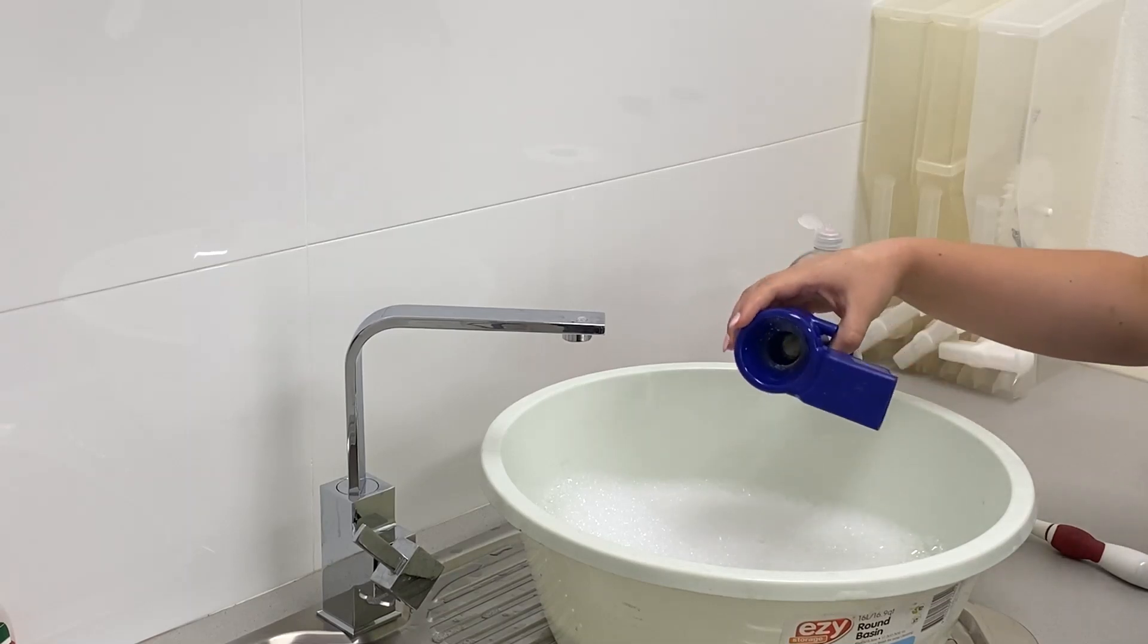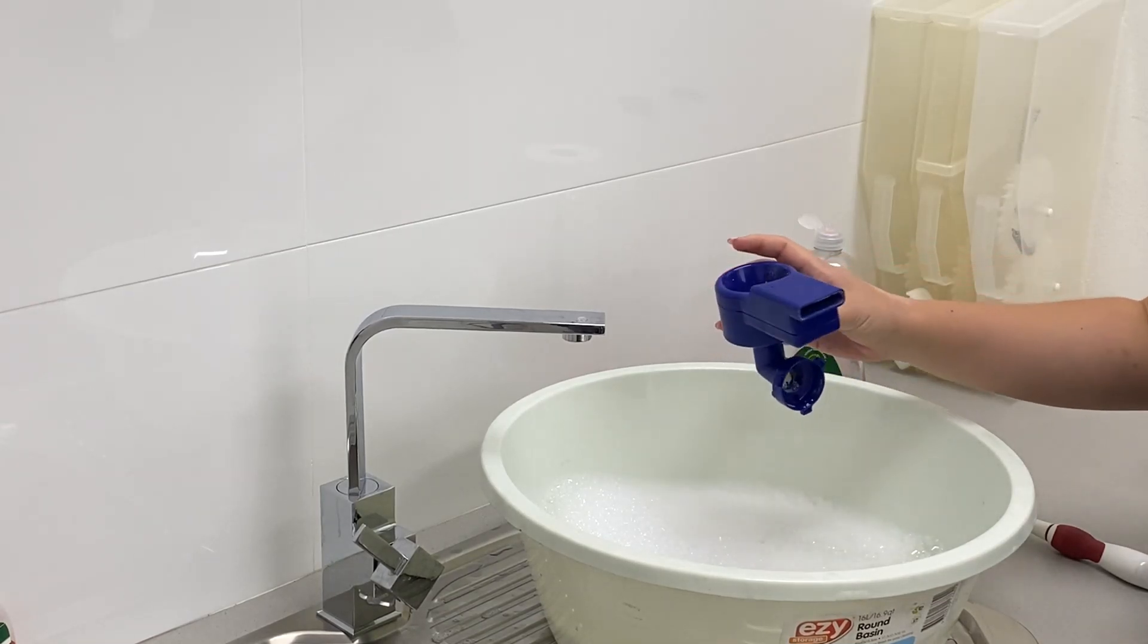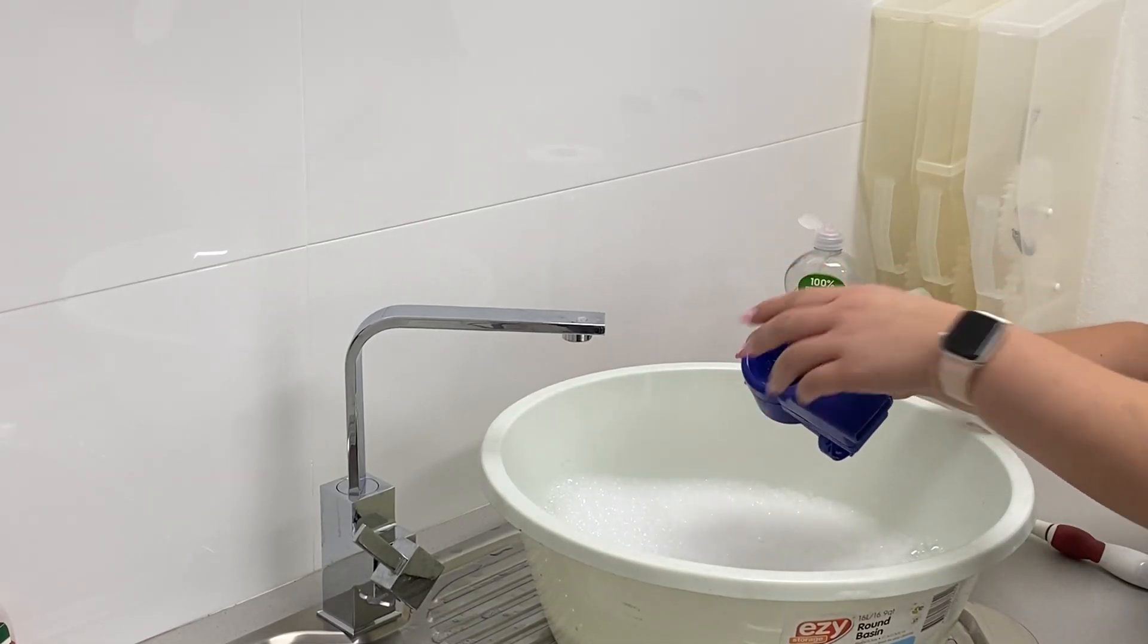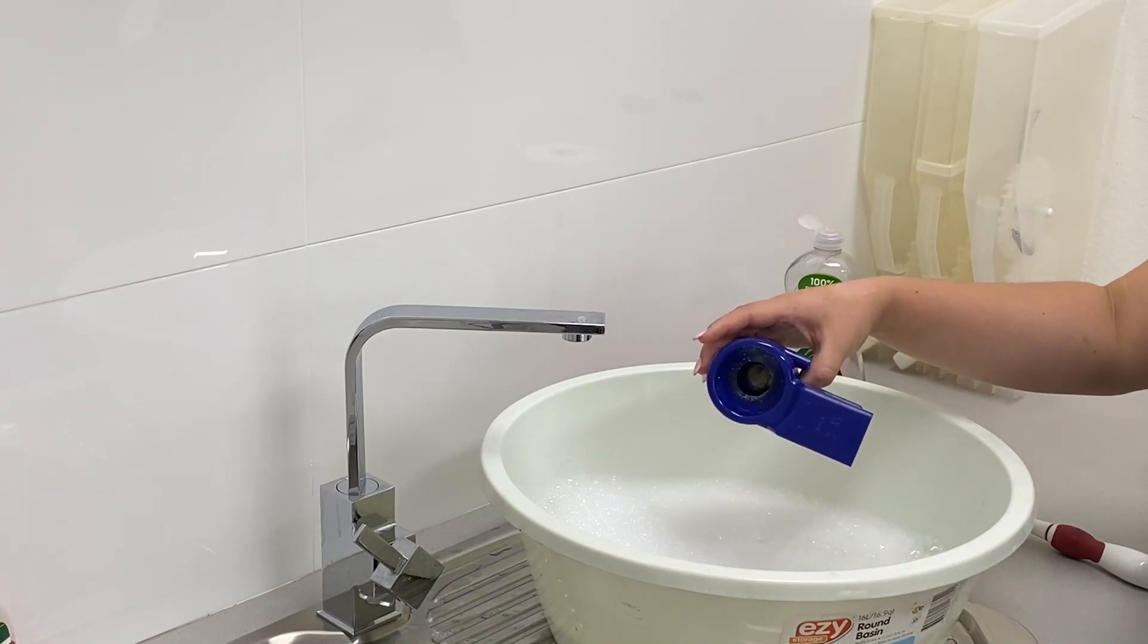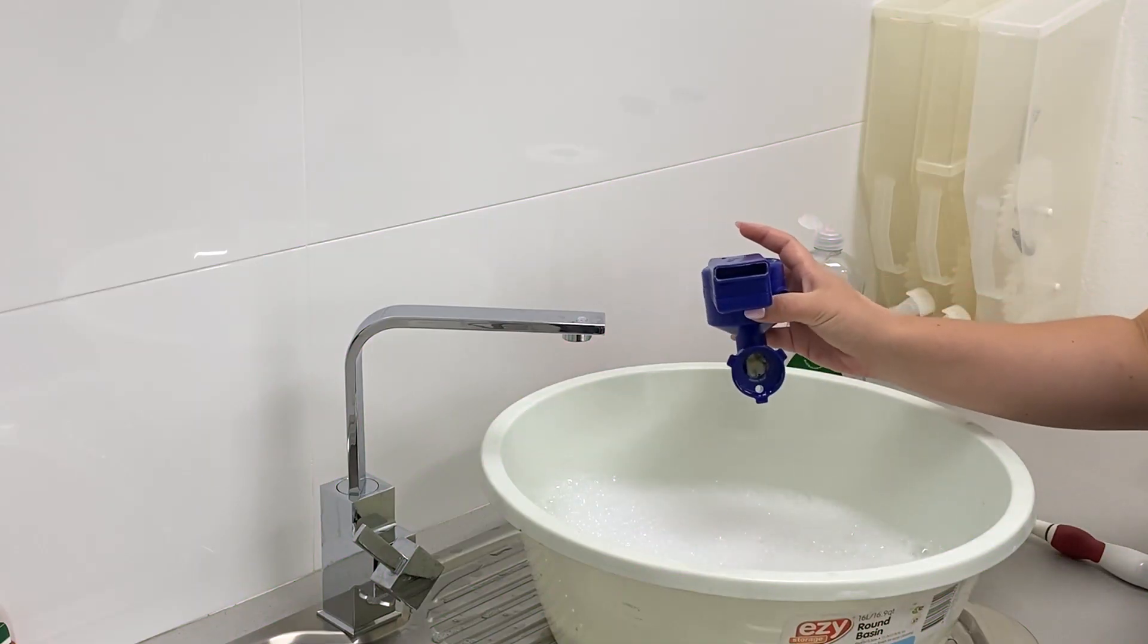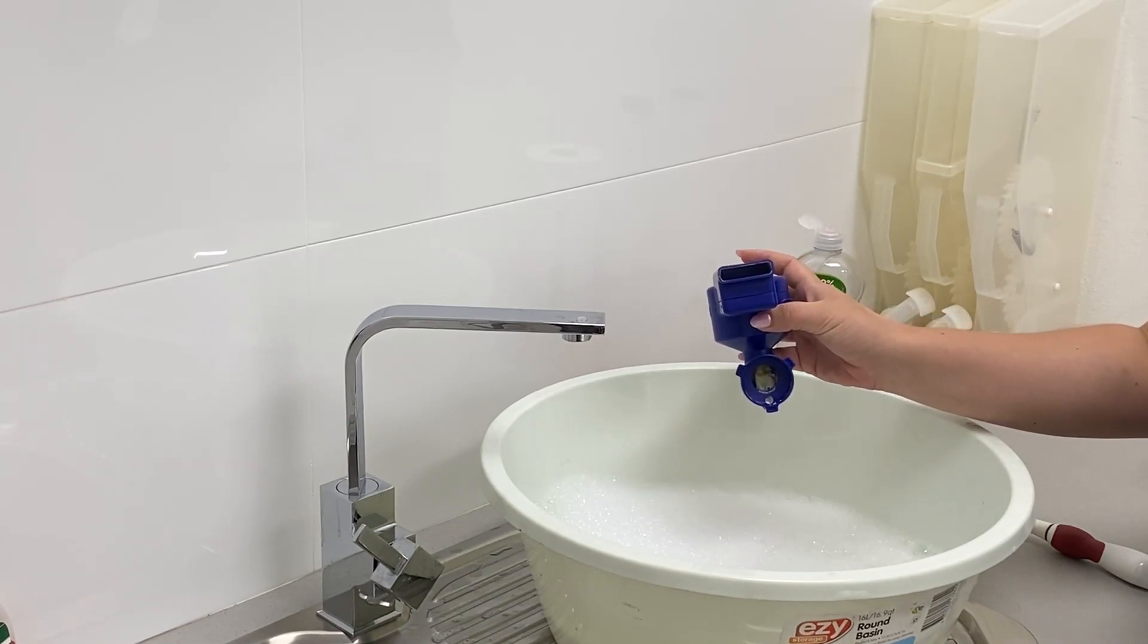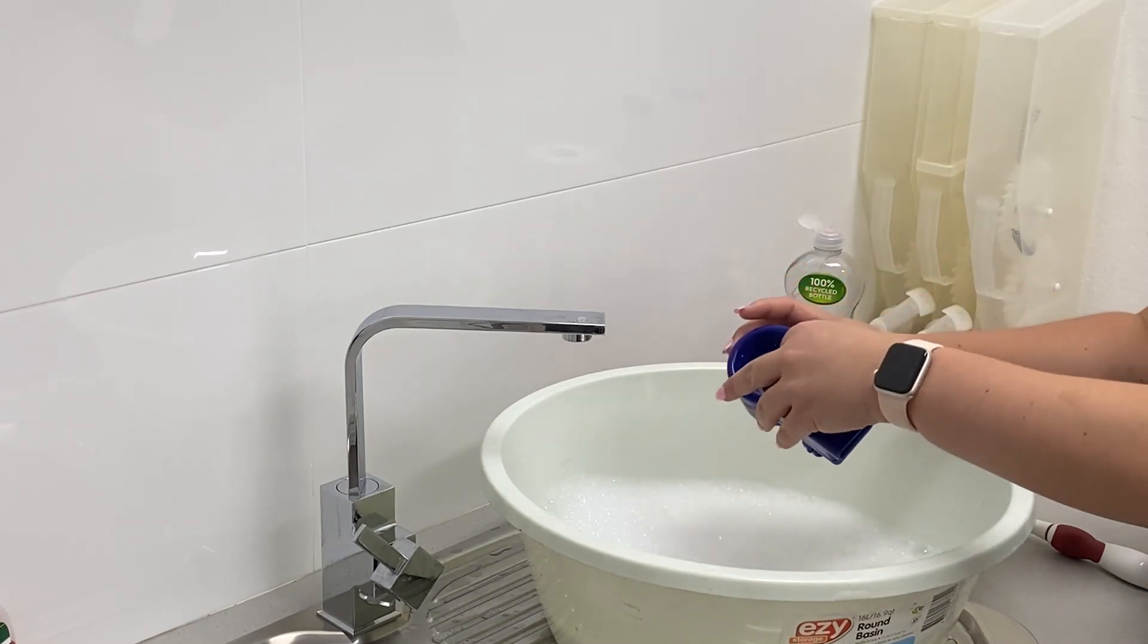The mixing bowl needs to be pulled apart into three pieces. You can see the top bit has a lot of product stuck onto it, and in the actual dispensing area where the mixing is done, there's a lot of product buildup.